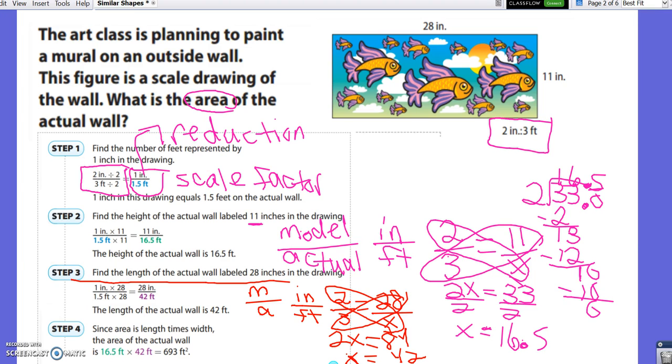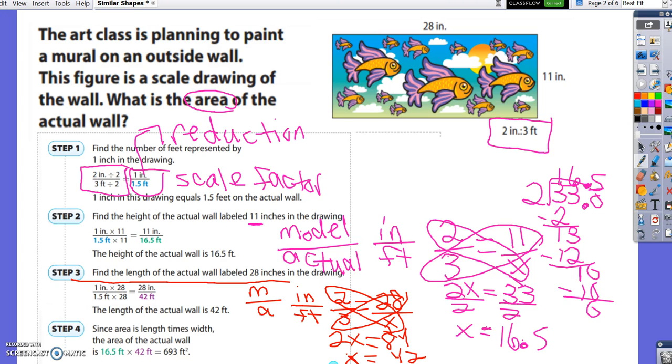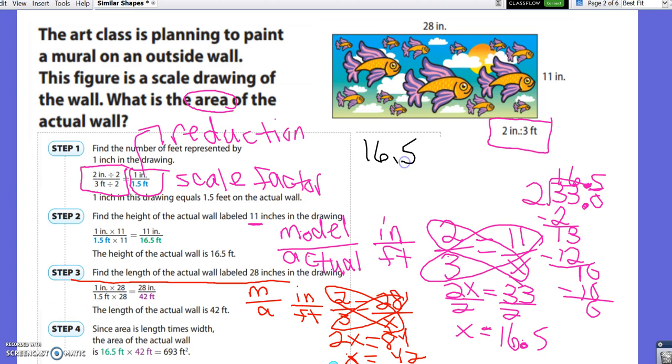Now we need to find the area. So we're going to take 16 and a half and multiply it by 42 to get the area of the wall. 2 times 5 is 10. 2 times 6 is 12, plus 1 is 13. 2 times 1 is 2, plus 1 is 3. 0 placeholder. 4 times 5 is 20. Carry the 2. 4 times 6 is 24, plus 2 is 26. Carry the 2. 4 times 1 is 4, plus 2 is 6. And when we add that, we're going to get 0, 3, 9, and 6. We have one decimal place. So we move one decimal place over and we get 693 feet squared.